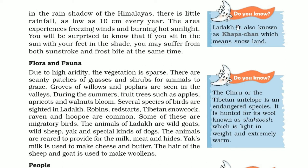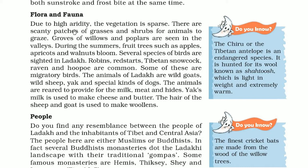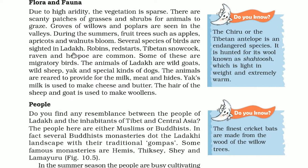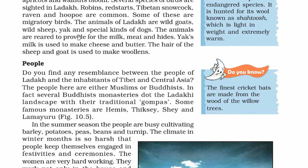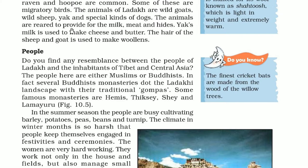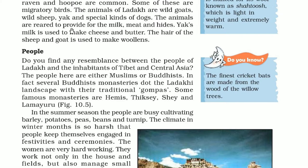Ladakh is also known as Khaapachan, which means snow land. Due to high aridity, vegetation is sparse, with scanty patches of grasses and shrubs. Groves of willows and poplars are seen. During summer, fruit trees like apples, apricots and walnuts bloom. Several species of birds are sighted, like robins, redstarts, Tibetan snow cock, raven and hoopoe, some of which are migratory. Animals include wild goat, wild sheep, yak and special kinds of dogs, reared for milk, meat and hides. Yak milk is used for cheese and butter, and the hair of sheep and goat is used to make woolens. The finest cricket bats are made from the wood of the willow tree.